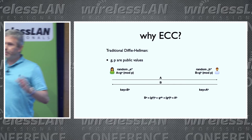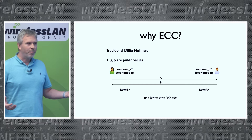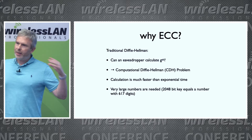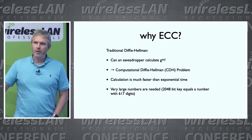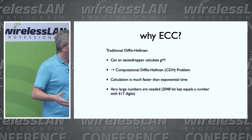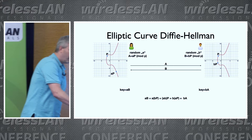So why do we use elliptic curve cryptography, where we have the traditional Diffie-Hellman algorithm that works great? Well, if the attacker wants to calculate the key that two parties agreed on, he has to solve the computational Diffie-Hellman problem. The algorithms for this get more efficient the longer the key sizes, so we need really large keys — which make our operations slow — to get sufficient security.